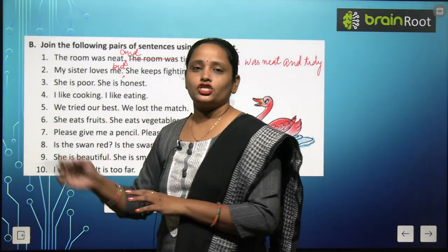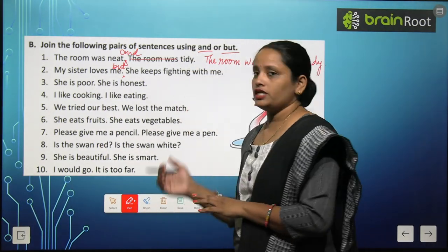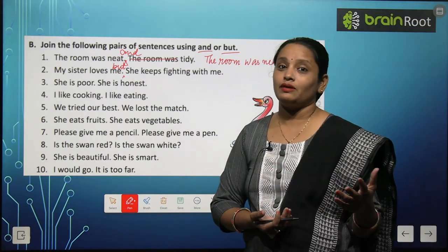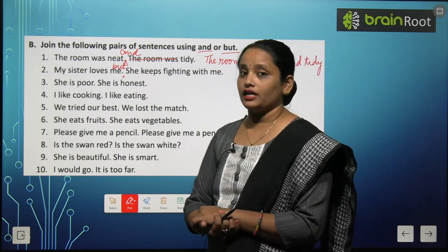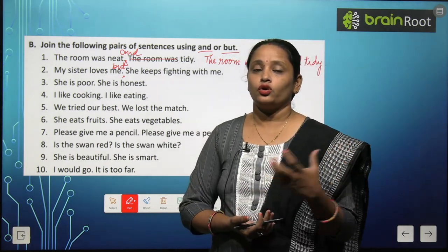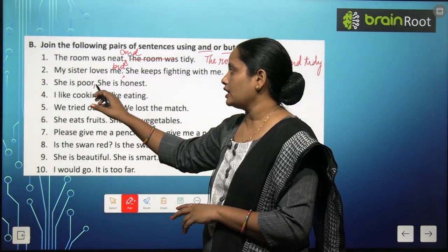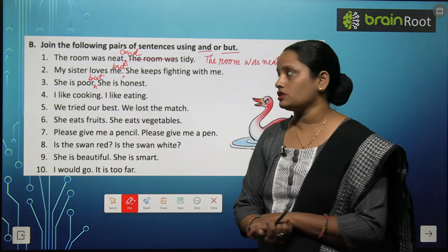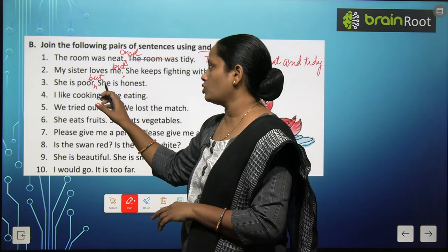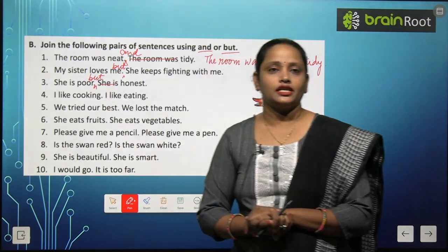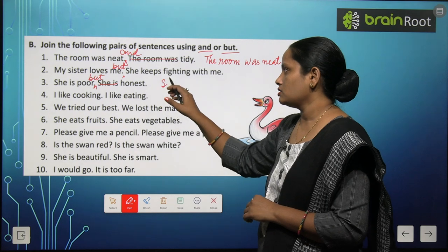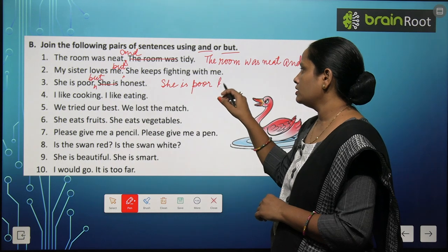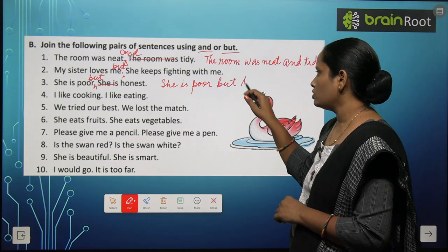Third pair: 'She is poor. She is honest.' वो गरीब है, लेकिन honest है — दोनों एक दूसरे के opposite हो गए। तो हम 'but' use करेंगे। 'She is' दो बार आ रहा है तो एक बार लिखेंगे। Sentence: 'She is poor, but honest.'